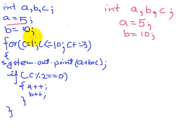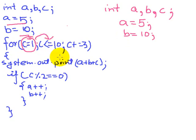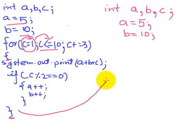Now in the for loop, we have the initialization part, then we have the testing expression — the testing condition. If this condition is true, then the set of statements within these braces are to be executed. Once execution is done, the control is transferred back to the updation part.